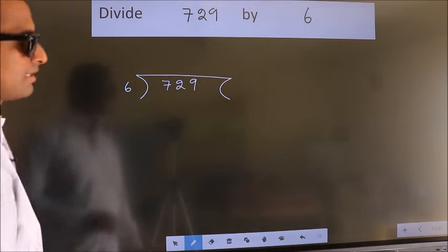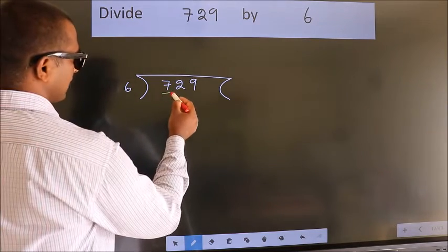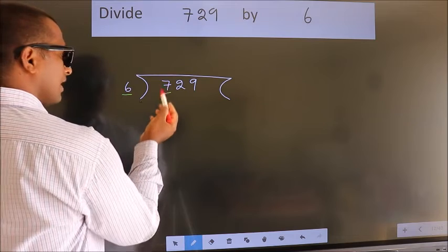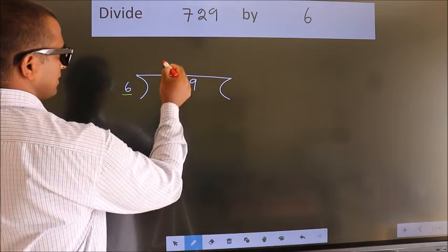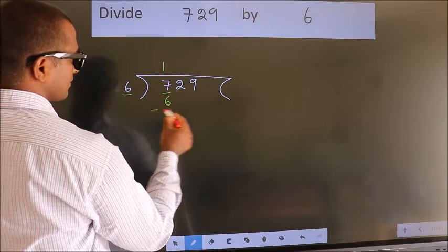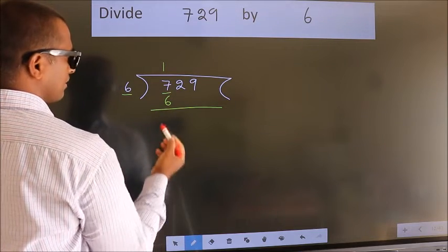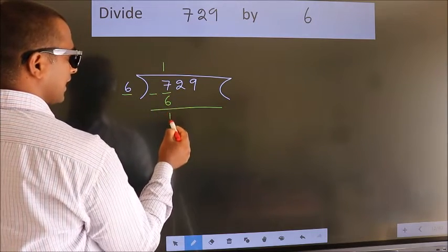Next. Here we have 7, here 6. A number close to 7 in the 6 table is 6 once 6. Now we should subtract. We get 1.